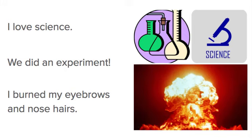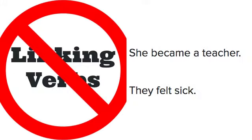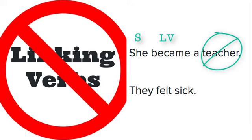Alright, before we wrap up, we've got a couple of nevers to go over. Direct objects will never follow a linking verb. Let's look at some examples. She became a teacher — she's the subject, became is a linking verb, and it's connecting the noun teacher back to she. It's renaming she. So in this case, a teacher is not the direct object.